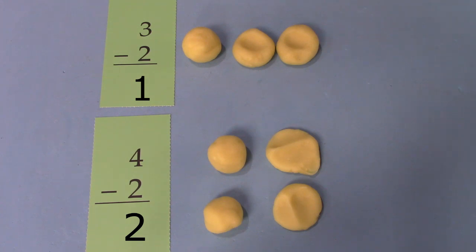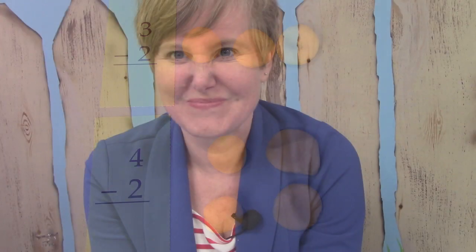Class, I know that you're going to be doing a great job with these facts. When we take away 2, our answer is always just 2 numbers down the number line from our original number. Let's take a look at some of our facts again.